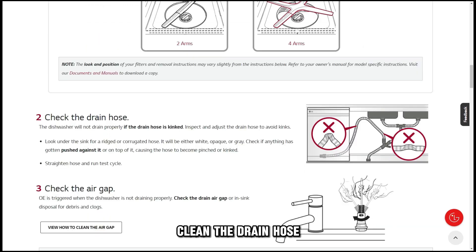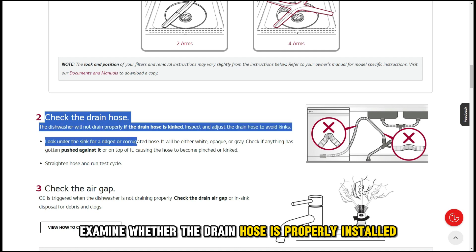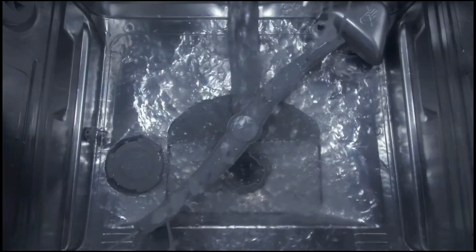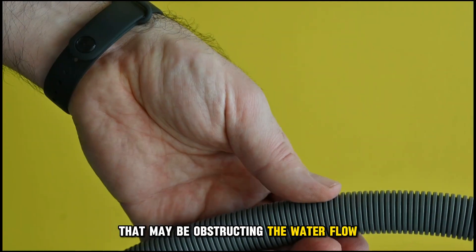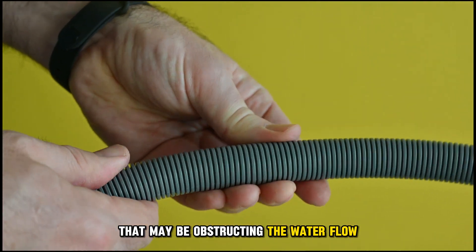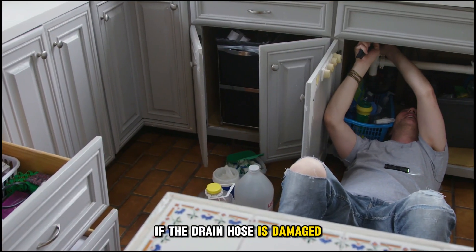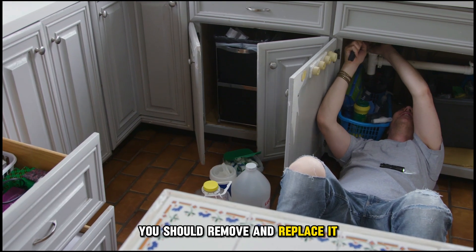Clean the drain hose. If you notice any bends that may be obstructing the water flow, straighten the drain hose. If the drain hose is damaged, you should remove and replace it.